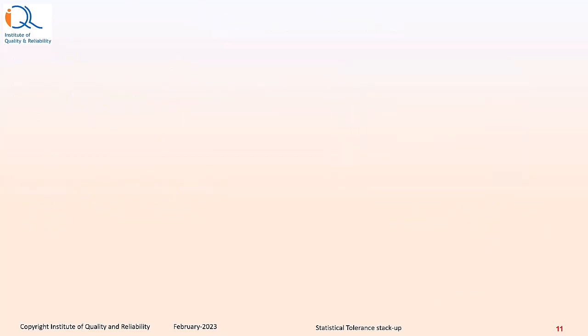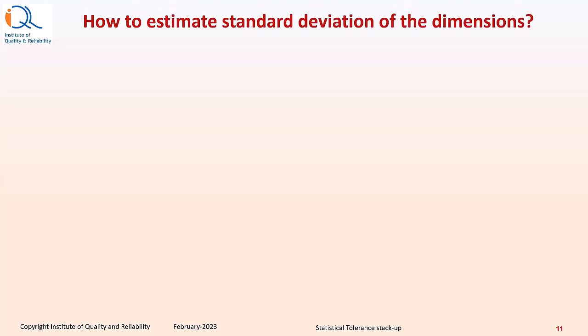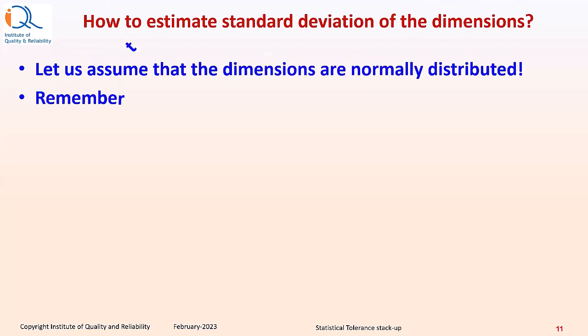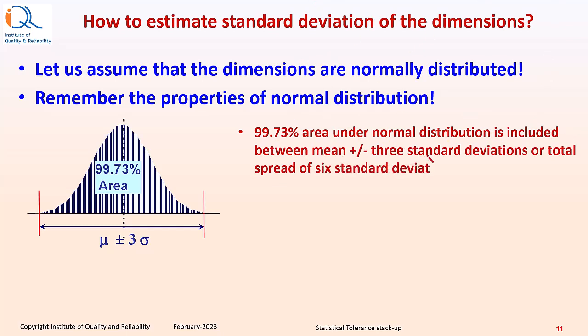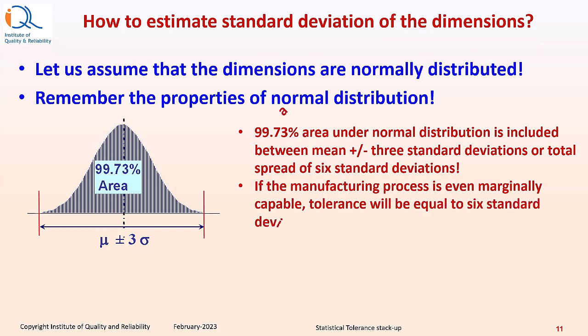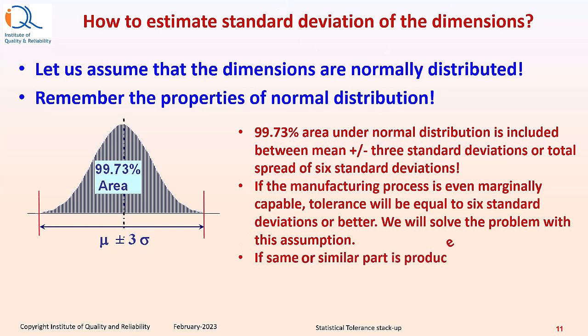In statistical tolerancing, we need to understand how to estimate standard deviation of the dimensions. Let us assume that the dimensions are normally distributed. Remember the properties of normal distribution: 99.73% area under normal distribution is included between plus or minus 3 standard deviations or total spread of 6 standard deviations. If the manufacturing process is even marginally capable, tolerance will be equal to 6 standard deviations or better. We will solve the problem with the assumption that tolerance equals 6 standard deviations. If the same or similar part is produced earlier, we can use the historical value of the standard deviation of such a part.